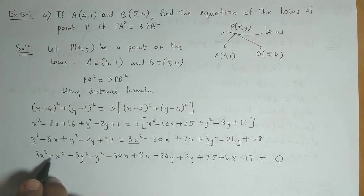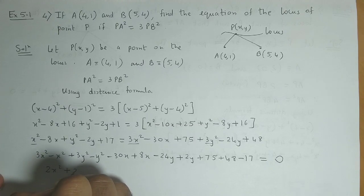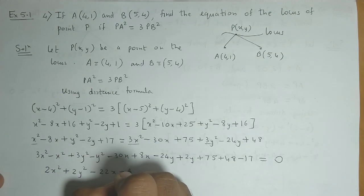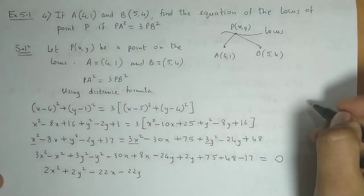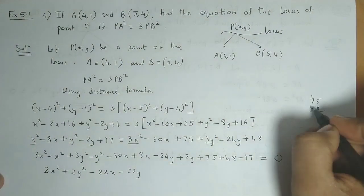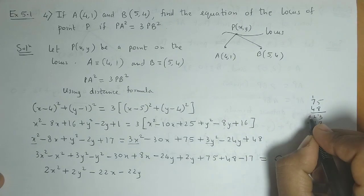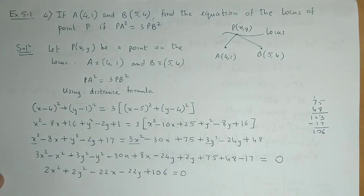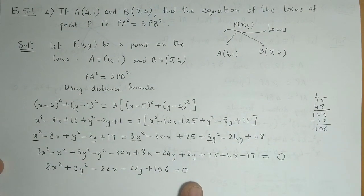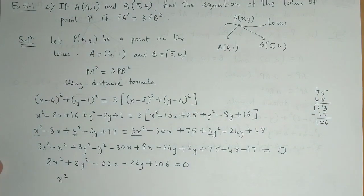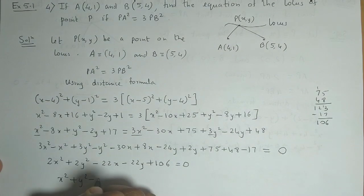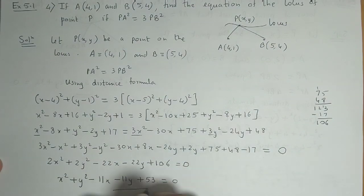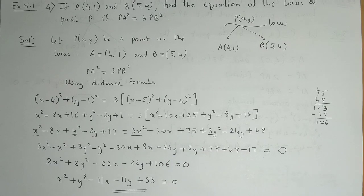So the equation becomes 2x squared plus 2y squared minus 22x minus 22y plus 106 is equal to 0. Now we can divide throughout by 2. The final equation is x squared plus y squared minus 11x minus 11y plus 53 is equal to 0. So this is the equation of the locus.